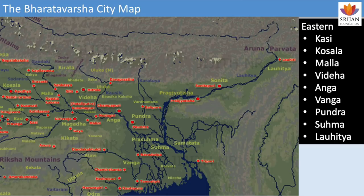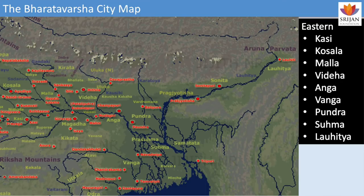The easternmost point mentioned in Mahabharata is the Lauhitya — the name of the Brahmaputra river. The masculine name Brahmaputra is not mentioned in Mahabharata or Ramayana; the actual name was Lauhitya, meaning reddish in color. The Bengal region includes Suhma and Vanga — Vanga is what Bengal is called, the same name. Suhma, Prasuhma, and Pundra are the Bangladesh area. Anga Desh is in southern Bihar, south of the Ganga. Magadha is also the southern Bihar region.